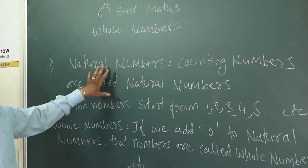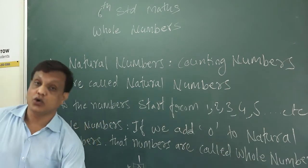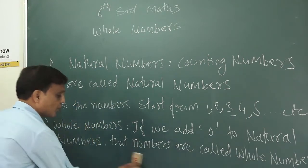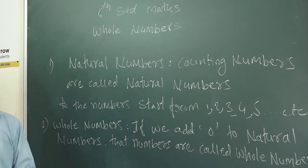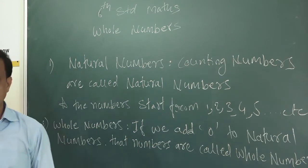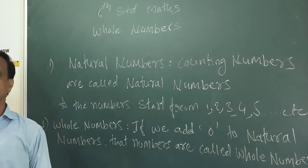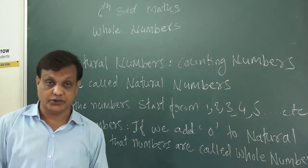So this is the definition of natural number and this is the definition of whole number. Once again: what is natural number? The counting numbers are called natural numbers. We always start counting from 1, 2, 3, 4, 5, 6. We never count from 0.